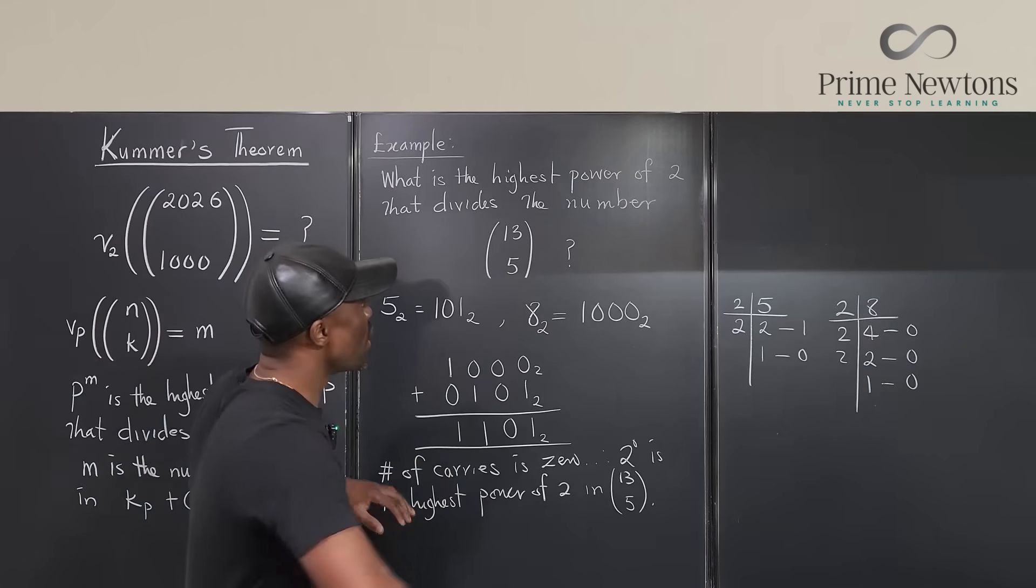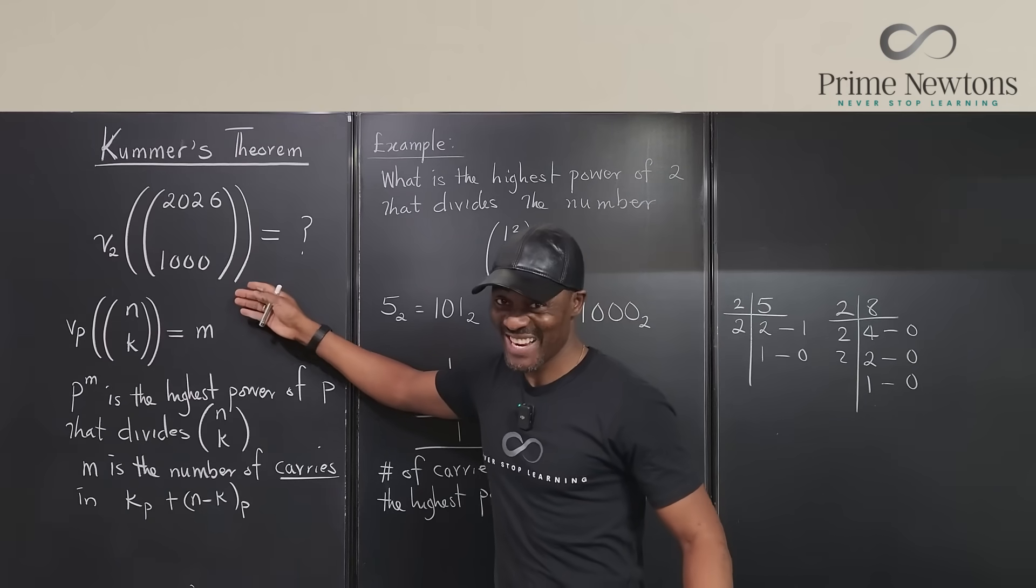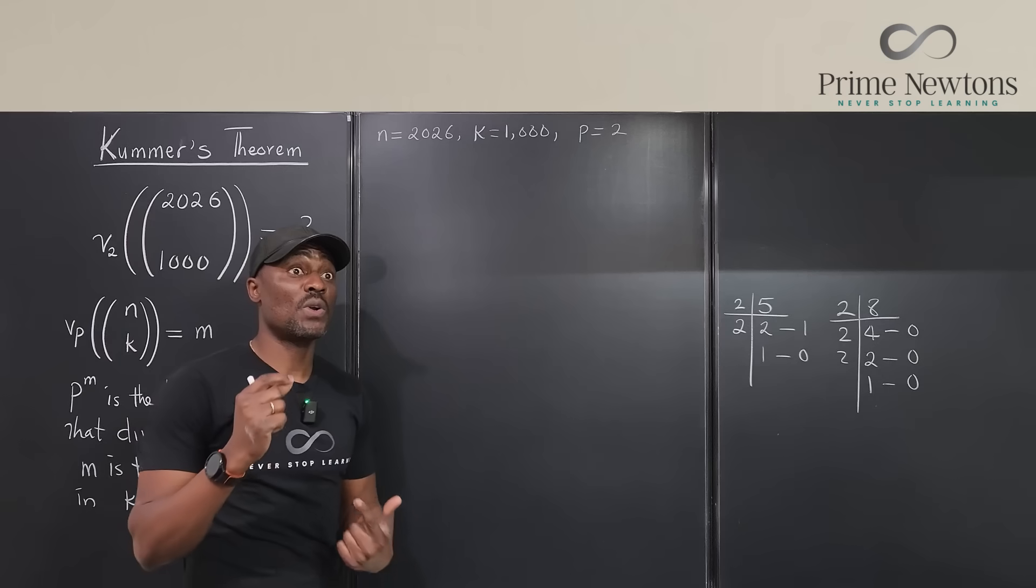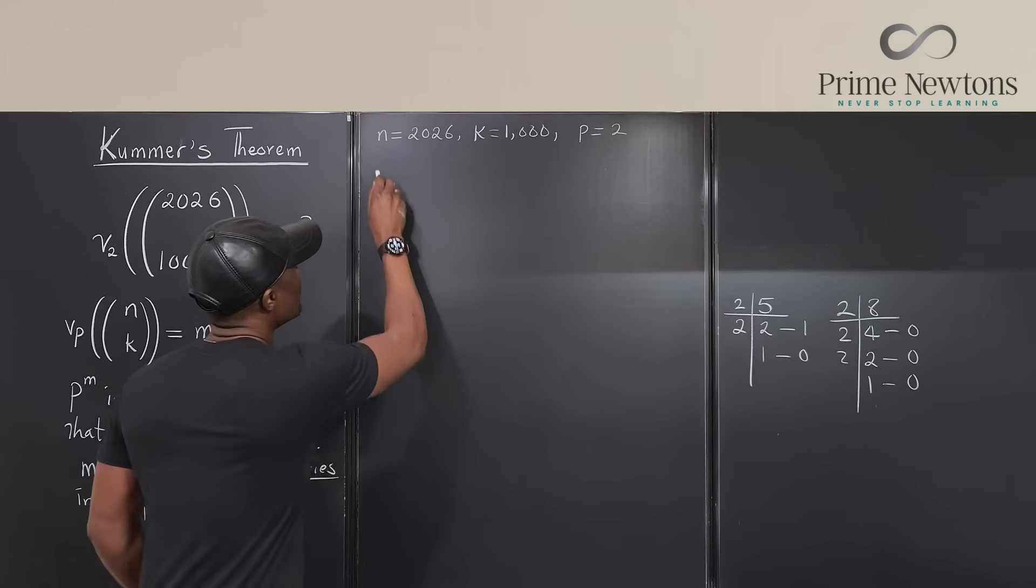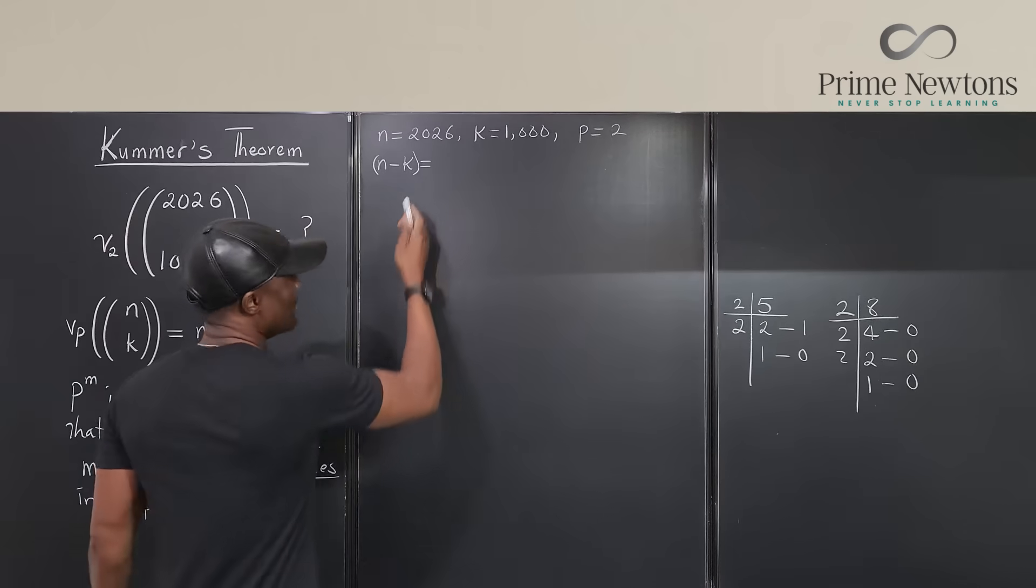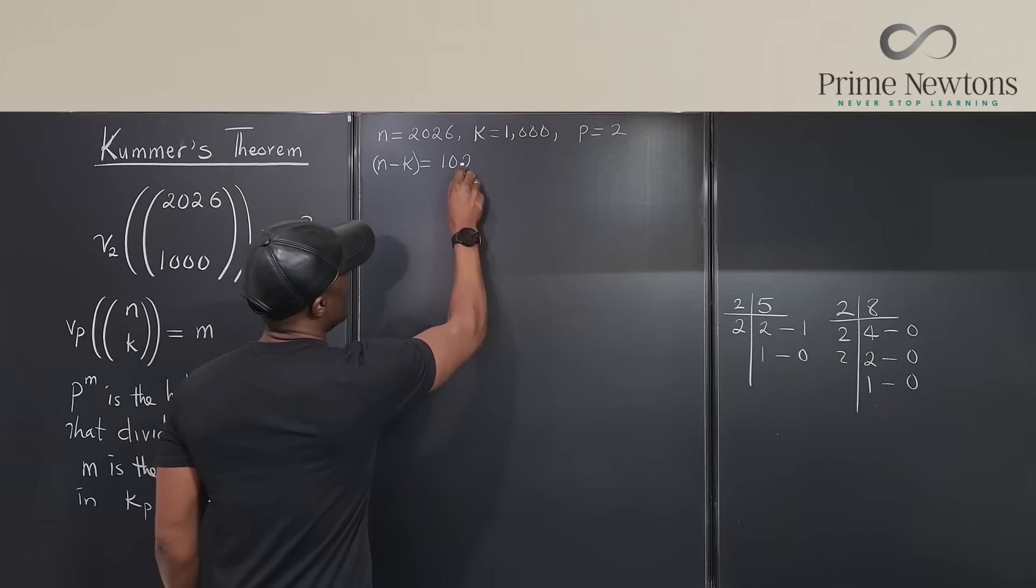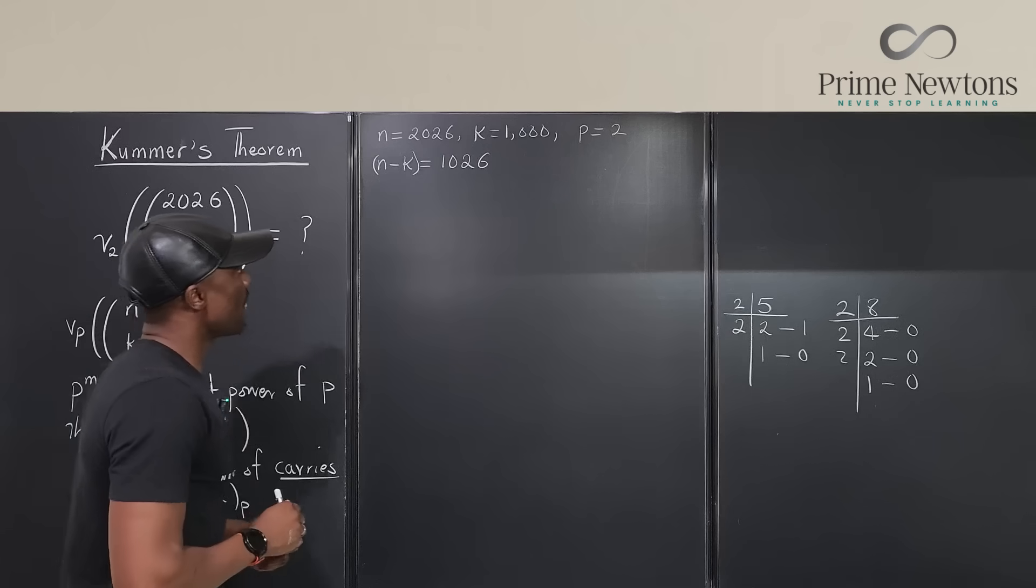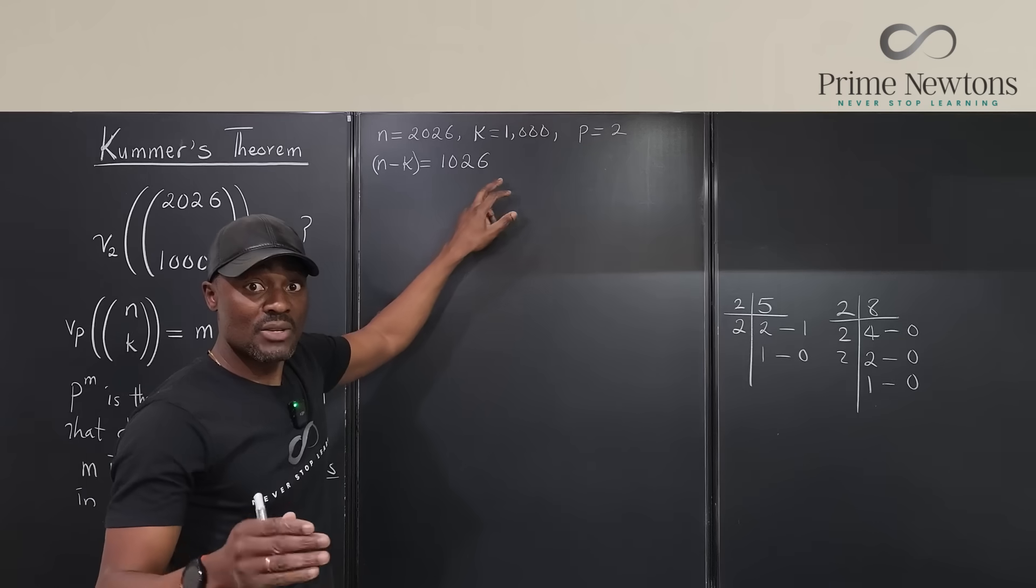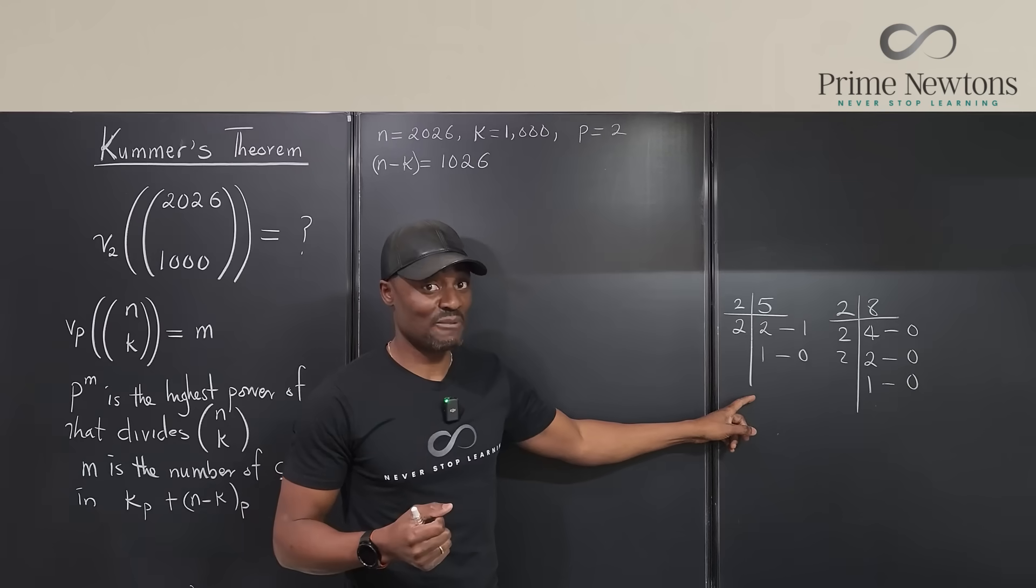So with everything that I have shown now, we can easily go back and answer this question. This question is actually quite interesting because it has a very interesting result. So the first thing you want to find is your n minus k. So n minus k will be equal to, remember you could do subtraction, but I like doing addition because the numbers are smaller. So n minus k will be 2026 minus 1000, that's 1026. So I need to write each of these numbers in base two. I write this in base two, write this in base two. Now you can use your method of converting or rewriting, but I like writing using this because this is fun and it brings back my childhood memories.